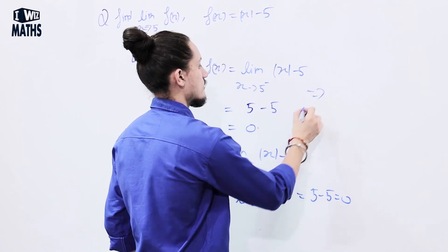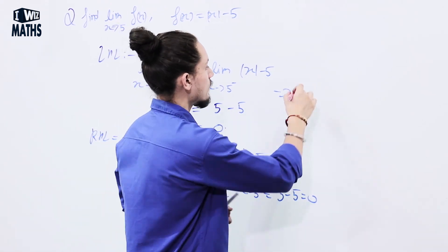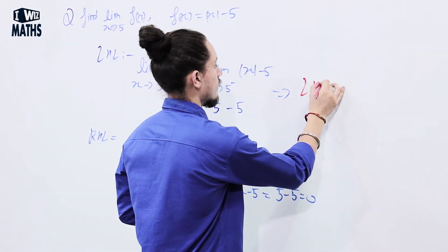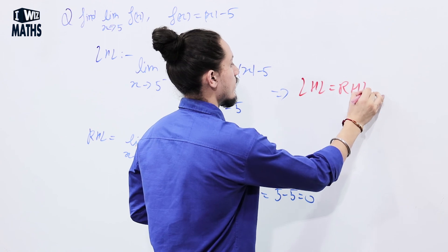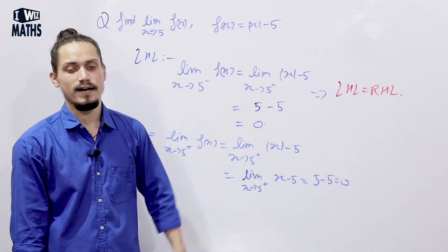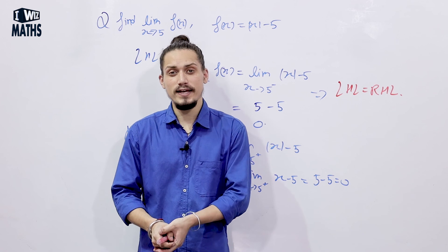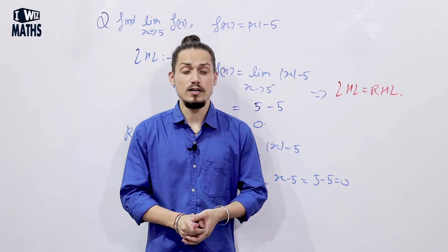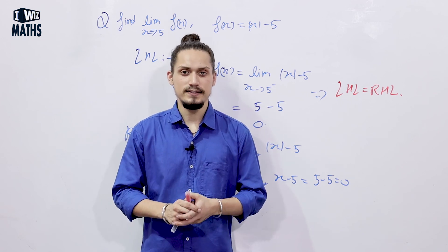This implies the left hand limit equals the right hand limit, and hence the limit exists in this case. So guys, this was it for today. Next time we'll learn about derivatives. Till then, keep practicing.